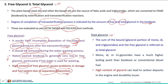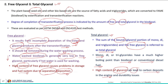Total glycerol is the sum of bound and free glycerol, including mono-, di-, and triglycerides which have a much higher boiling point than biodiesel or conventional diesel. High glycerol content may lead to carbon deposits in the engine and durability issues. Therefore, removal of glycerol at the end of the transesterification process is essential to avoid these issues during operation.